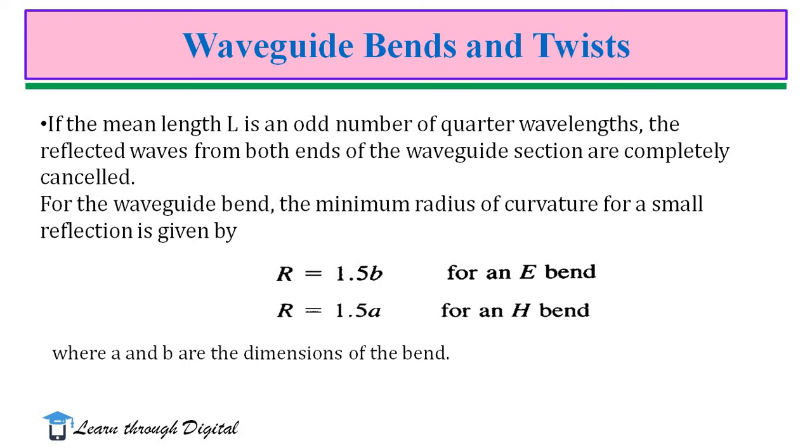Waveguide twists are also useful in many applications to ensure the polarization is correct. In order to reduce the reflections, we have to choose the radius of curvature as R equals 1.5b for E-bend and R equals 1.5a for H-bend, where a and b are the dimensions of the bend.